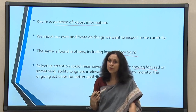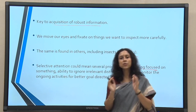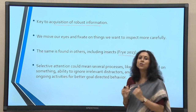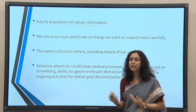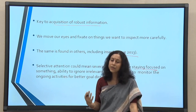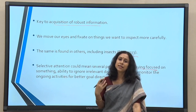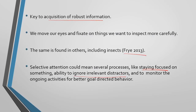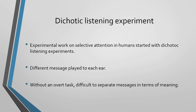In order to stay focused on one particular stimulus, one also has to be able to ignore many other incoming information which is irrelevant at that point of time — not relevant for your goal at that moment. Ignoring irrelevant distractors is a part of selective attention, as is monitoring ongoing activities for goal-directed behavior.